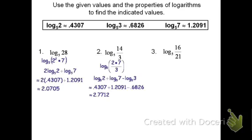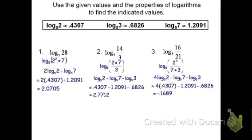For the last problem, log base 5 of 16 over 21: I know 2 to the 4th is 16, so this is log base 5 of 2 to the 4th divided by 21. And 21 is 7 times 3. Splitting it up: 4 log base 5 of 2, minus log base 5 of 7, minus log base 5 of 3. That log base 5 of 3 is subtracted because it's also on the bottom — the pieces on the bottom are subtracted. Substituting and simplifying, the answer is about negative 0.1689.